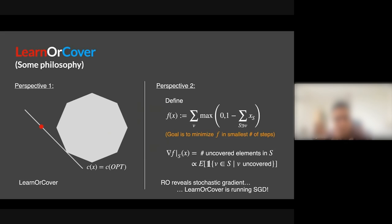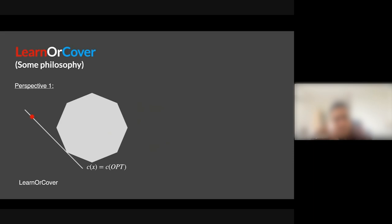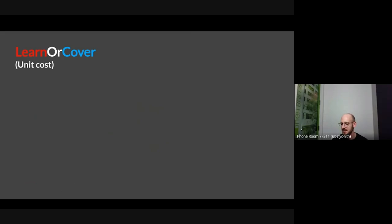A question came up: could you use this learn-or-cover idea somehow when you have recourse — if the sequence is adversarial but you can go back and change decisions? I've studied low-recourse set cover in adversarially ordered insertion and deletion streams. It'd be very interesting to quantify the trade-off between distance from uniformity and the recourse you need. We are actively thinking about how to relax the random order assumption.